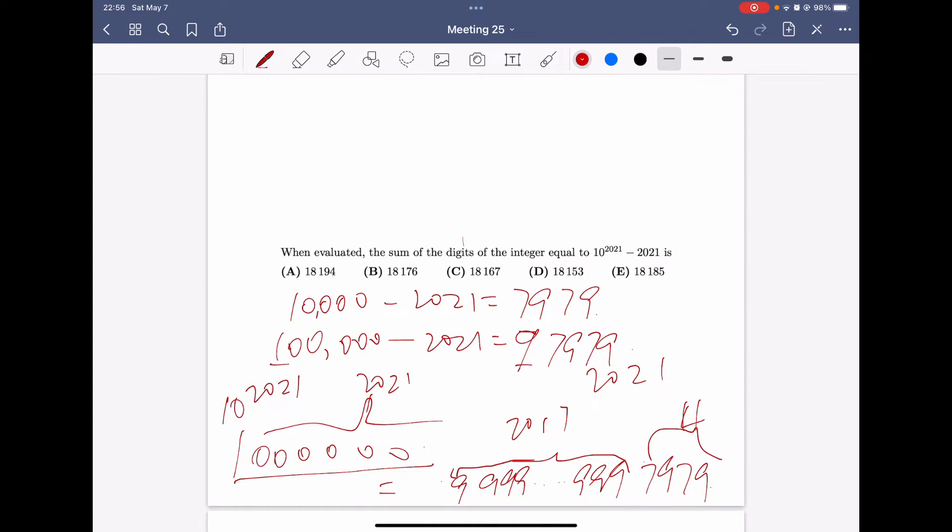We can calculate the sum of all the digits, which is 9 times 2017, plus 7, plus 9, plus 7, plus 9. And it gives us the answer E, which is the correct one.